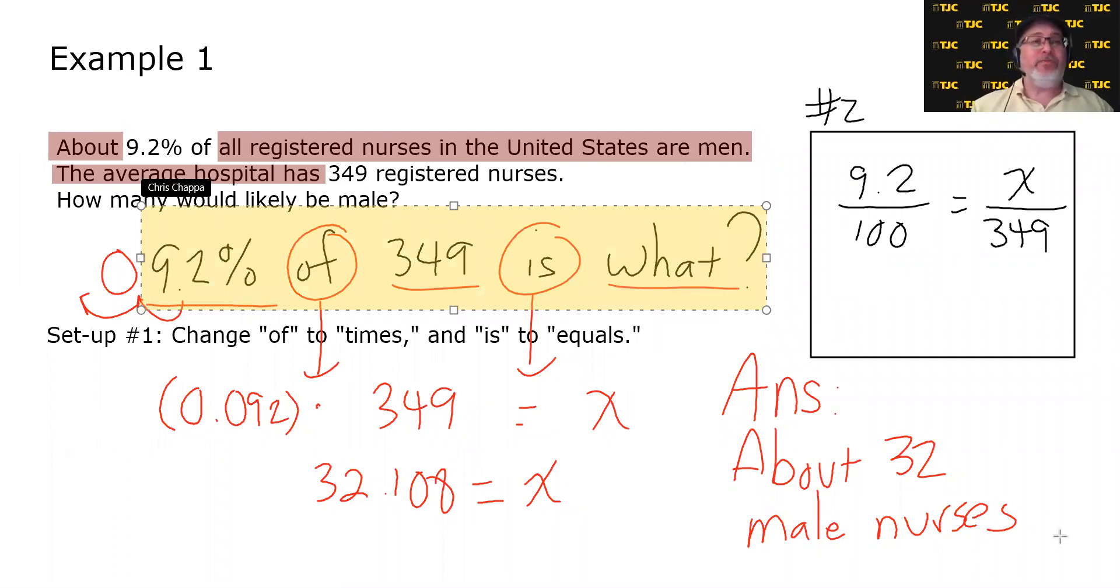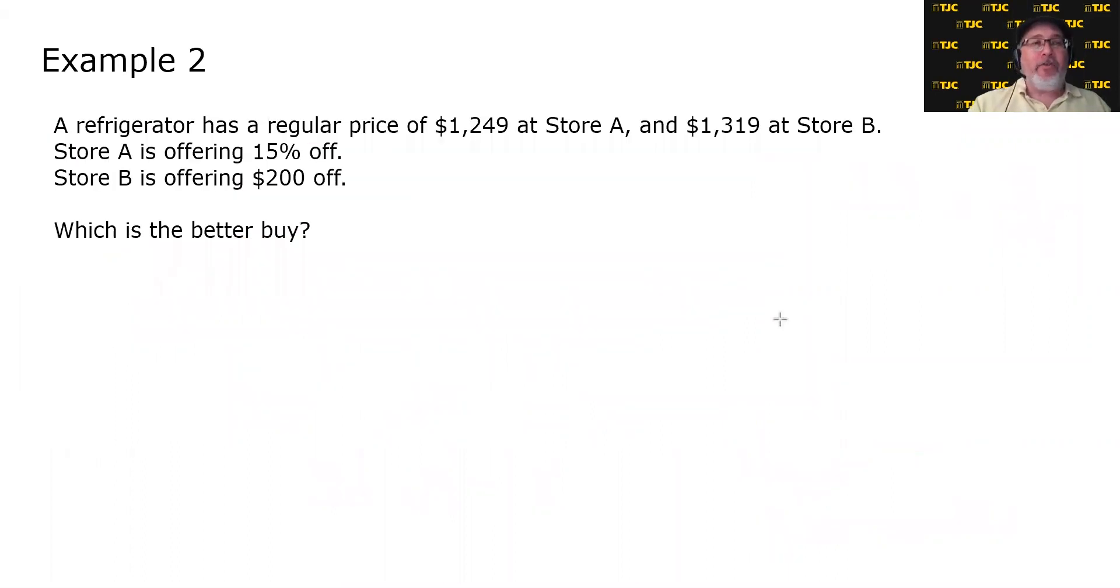Let's take a look at example two. A refrigerator has a regular price of $1,249 at store A and $1,319 at store B. Store A is offering 15% off. Store B is offering 20% off, which is the better buy.